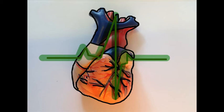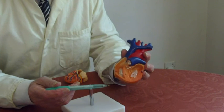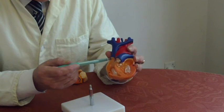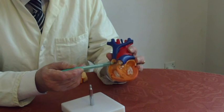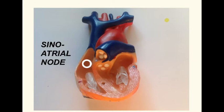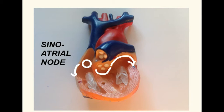What about the electrical impulses that keep the heart beating? Up here in the top right-hand corner there's a group of cells called the sinoatrial, or SA, node. This sends out regular electrical impulses that spread through the atria and cause atrial systole.